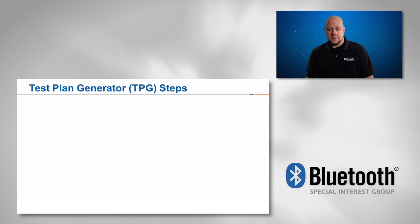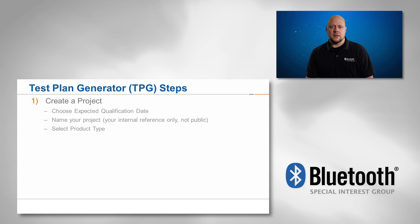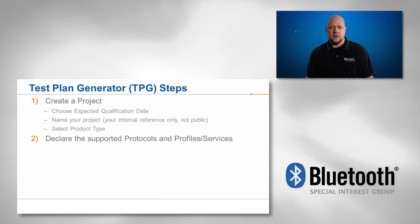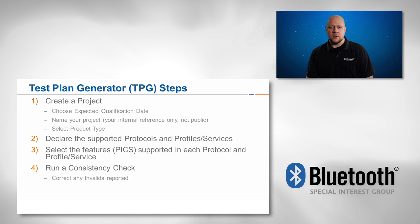Now that you know the TPG exists, let's talk about the steps involved in creating your test plan. First, you create a project by selecting when you expect to complete qualification, assign a name for your project, and select the product type. Next, you declare the protocols, profiles, and/or services along with the specific features that you want to support in your design. Last, you will run a consistency check to make sure your selections match the criteria and the test requirements. If the consistency check shows zero invalids, then it is time to generate your test plan.